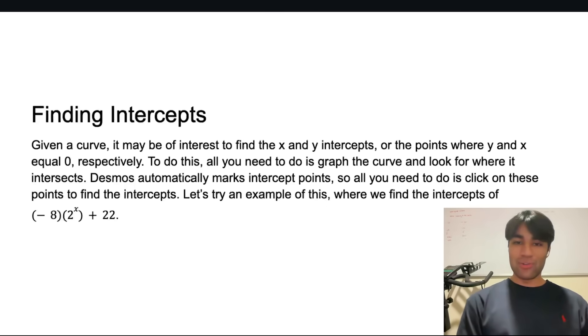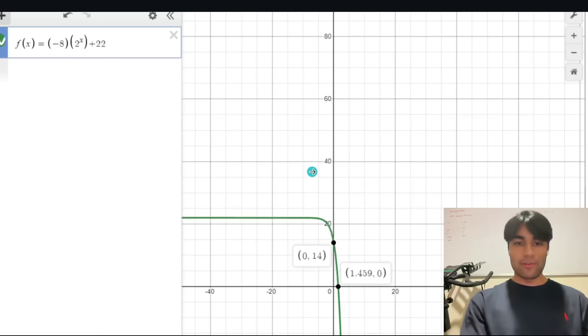Next let's talk about finding intercepts. Now I've already started to get into this but let's say we have an example question. Negative 8 times 2 to the power of x plus 22 and we need to know the x and y intercept. This is basically where x equals 0 and y equals 0 right. You can just type it into Desmos once again. You can do f of x equals put in your equation.